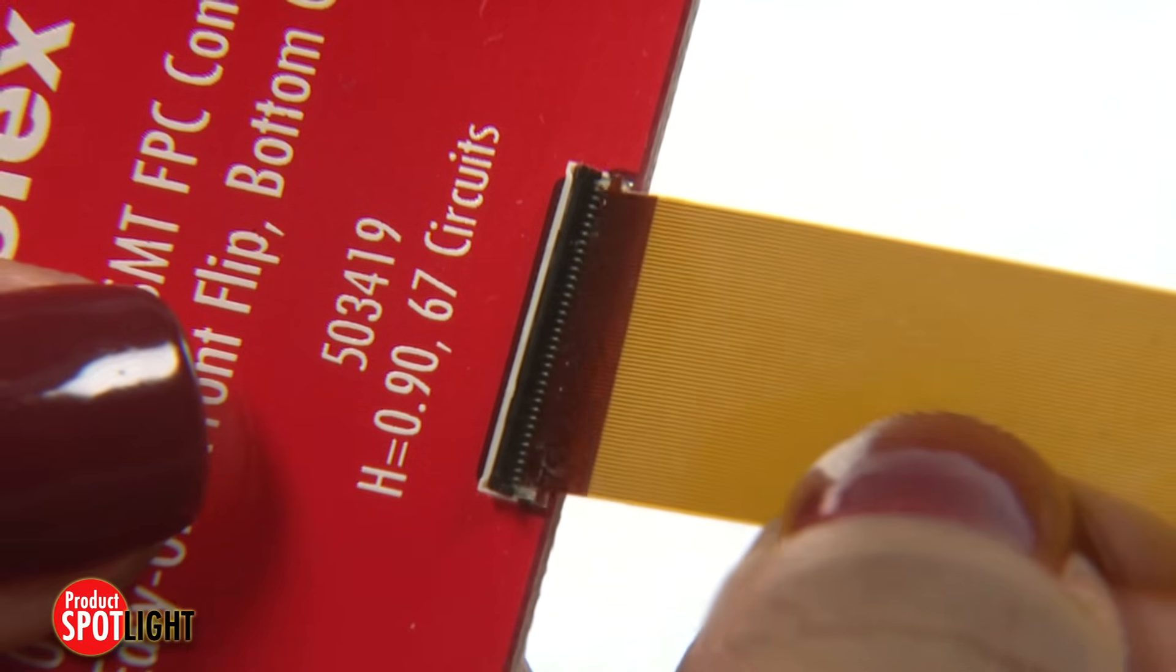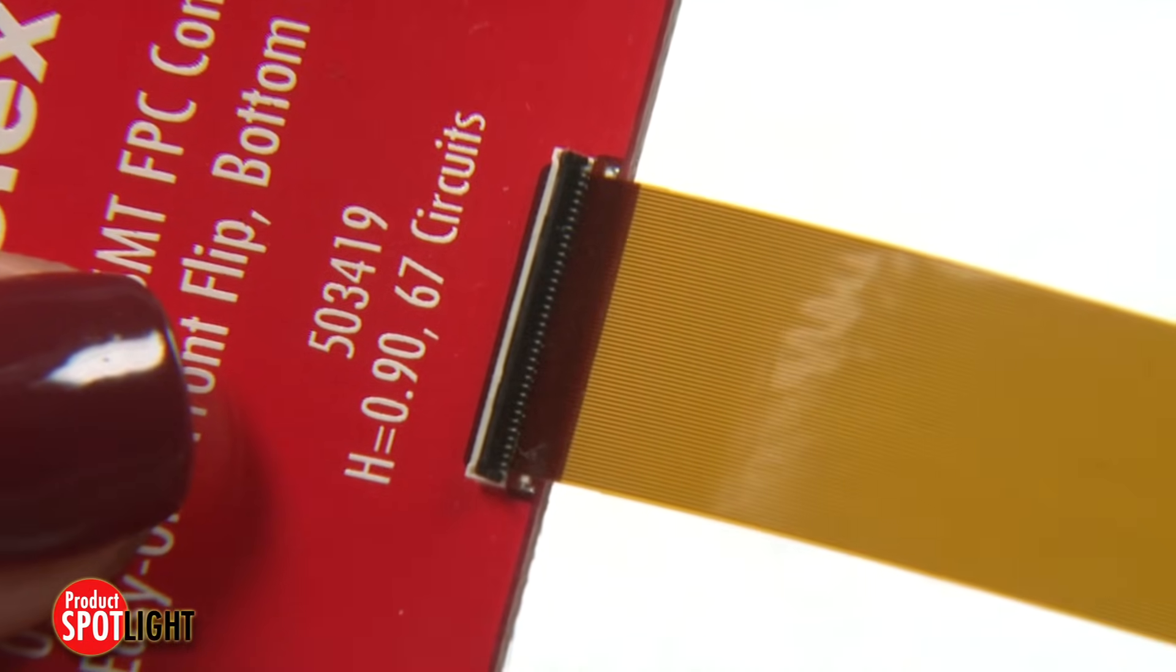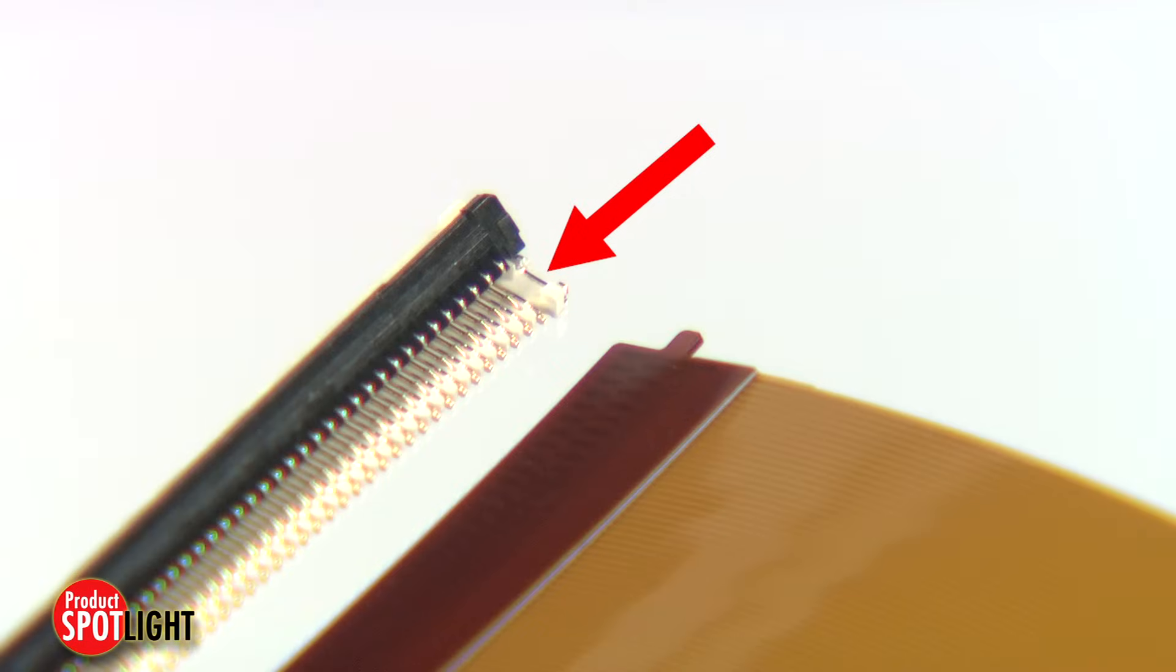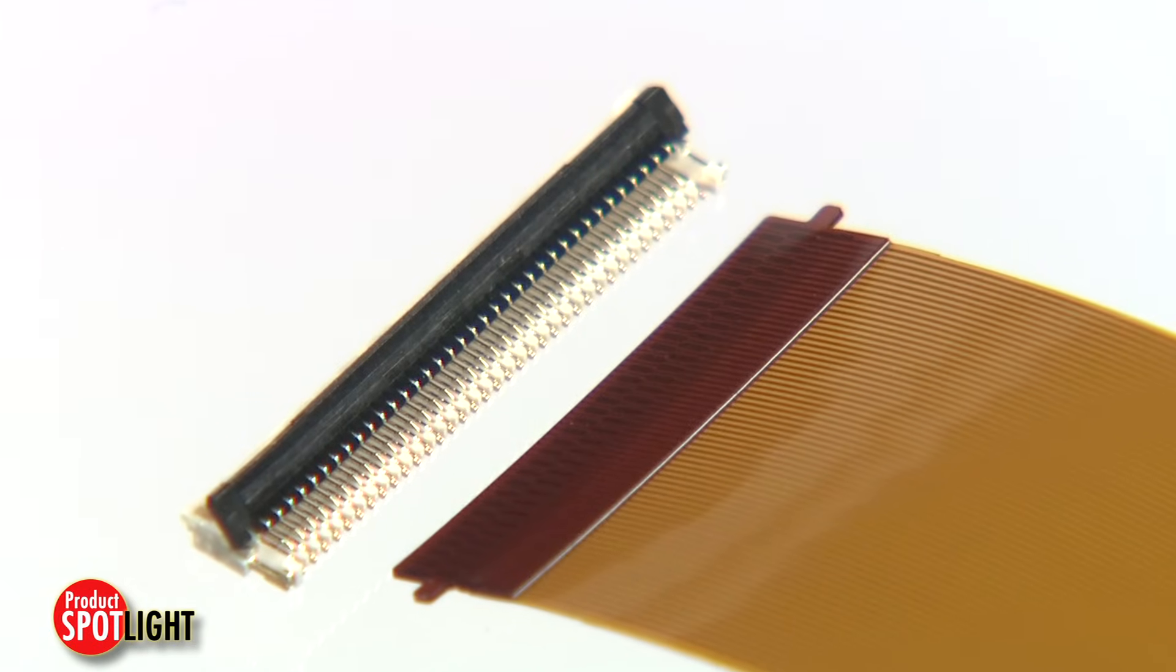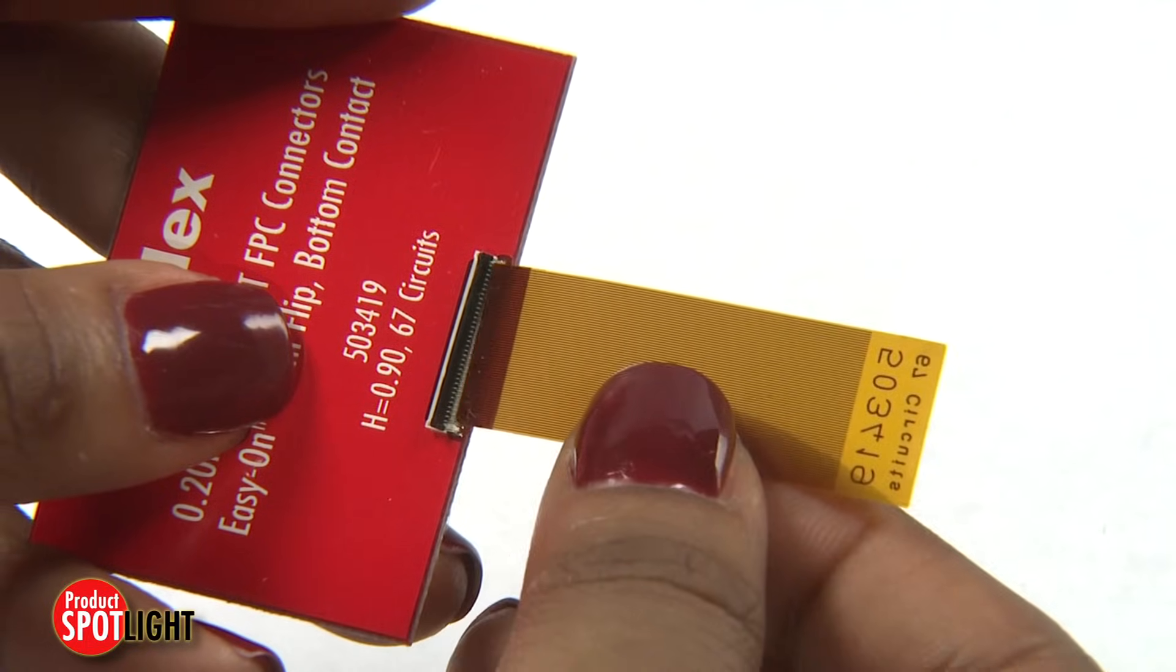And it's designed with easy assembly in mind. Housing notches in the connector accept FPC ear tabs to facilitate proper cable alignment, and the white housing design makes the tabs easier to see and align.